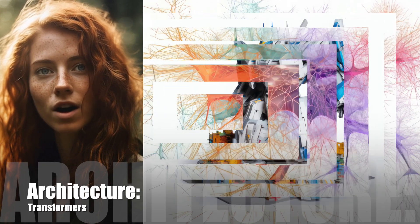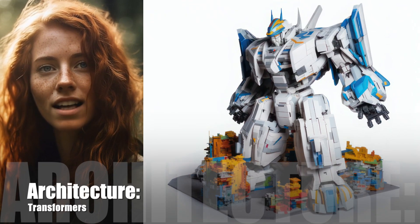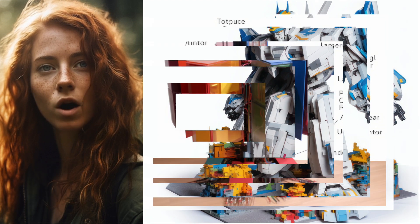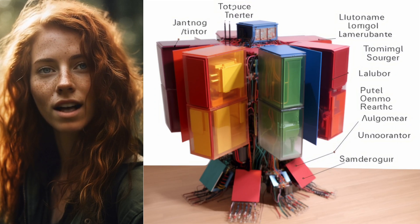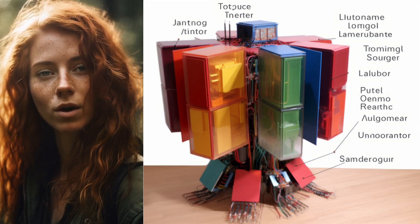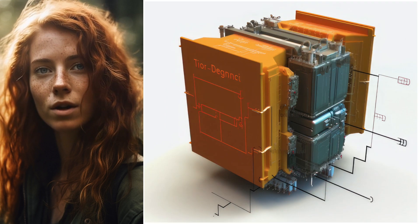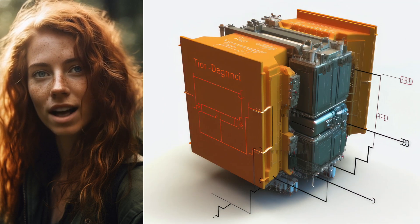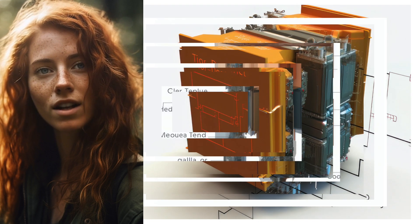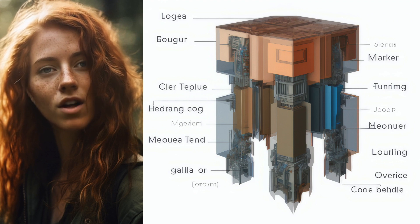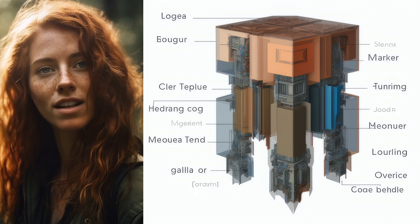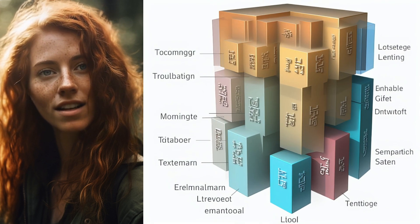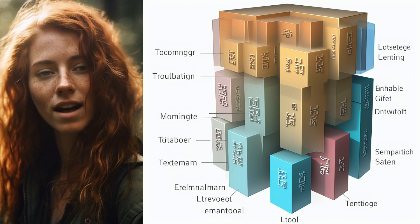Architecture: The core architecture of LLMs is the transformer, introduced by Vaswani et al. in 2017. Transformers use self-attention mechanisms, allowing the model to weigh the importance of different input tokens relative to each other. This enables the model to capture long-range dependencies and relationships within the text.